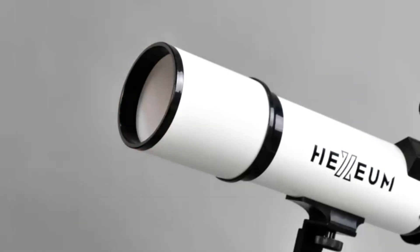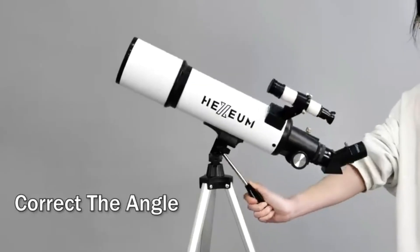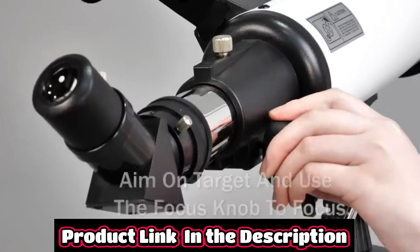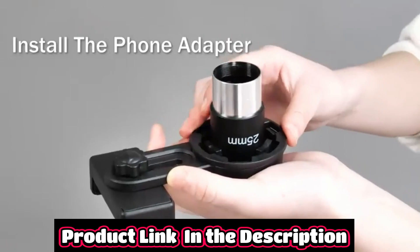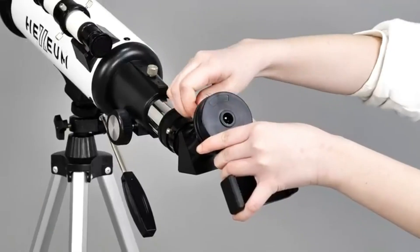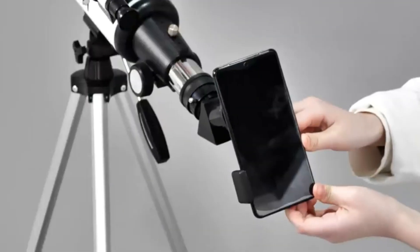Portable and convenient for easy stargazing, this telescope comes with a phone adapter, adjustable aluminum tripod, wireless remote control, and a carrying bag, making it portable and easy to capture breathtaking images from any location. Perfect for both beginners and experienced stargazers.